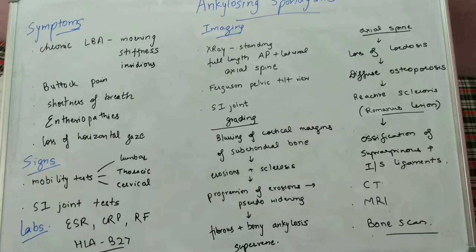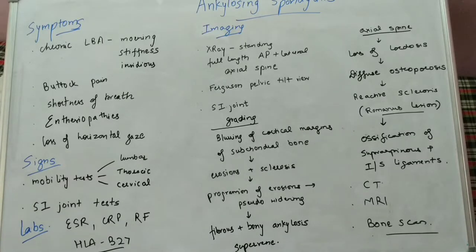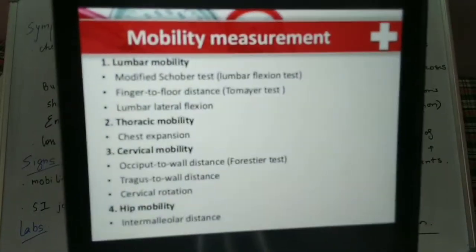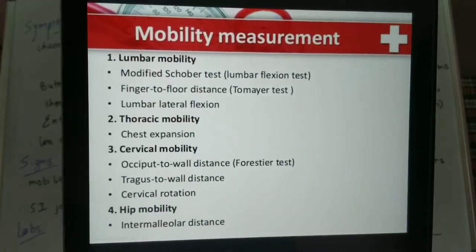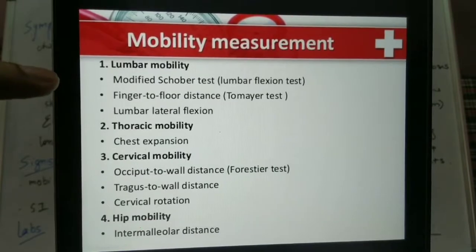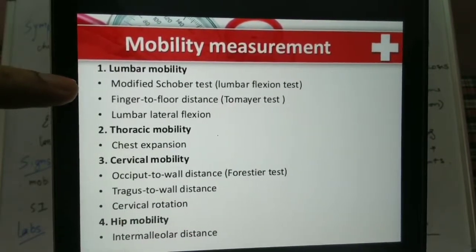Now, the various signs that we will check in the patient. First are the various mobility tests, classified into lumbar and cervical. For the lumbar spine, we have the Schober's test and the modified Schober's test. We can also go for the finger-to-floor distance and lateral flexion.